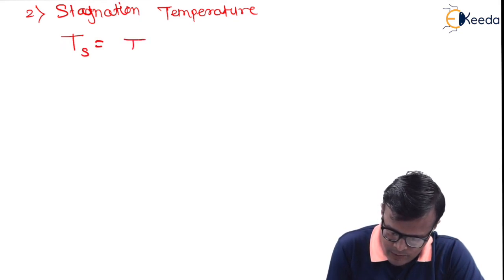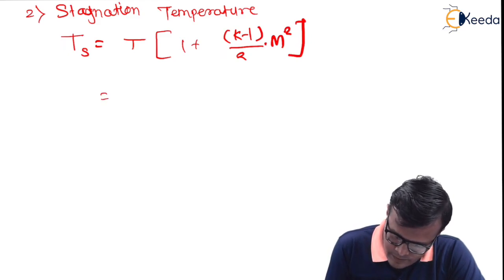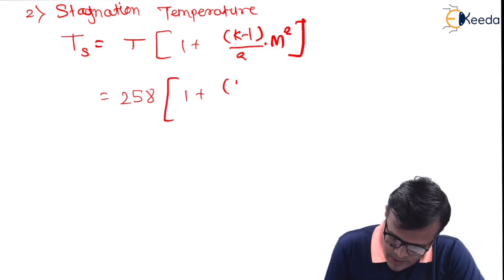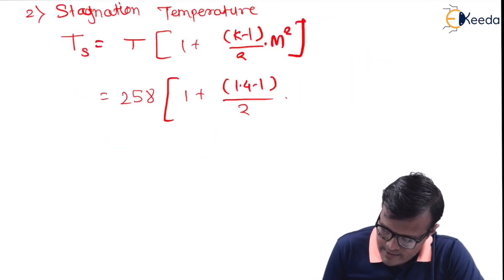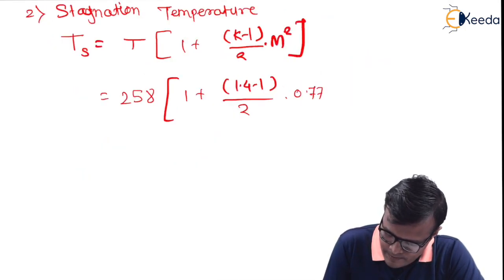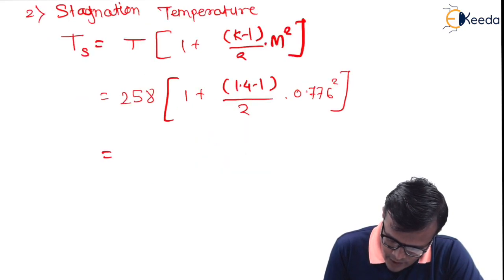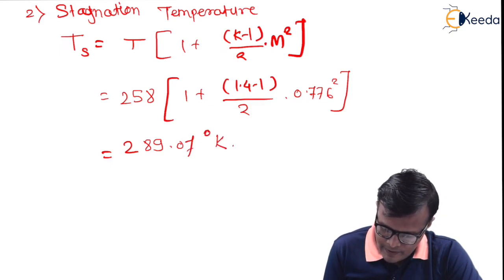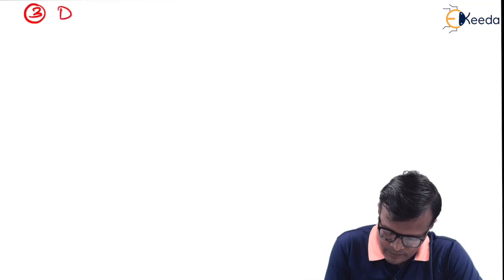Next is stagnation temperature. The formula is Ts equals T multiplied by bracket 1 plus (k minus 1) upon 2 into M squared. T is 258 Kelvin, and M is 0.776. We get the value as 289.07 Kelvin — so there is an increase in temperature as usual.